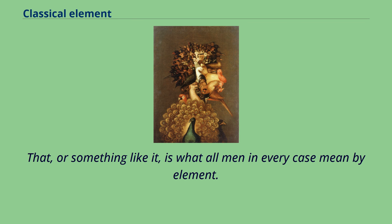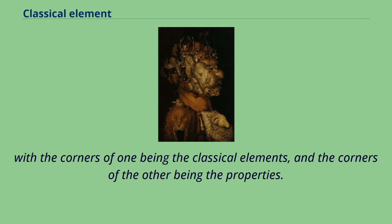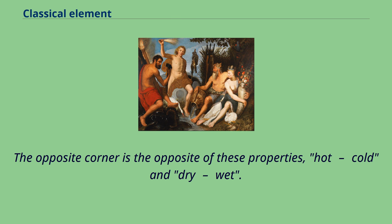In his On Generation and Corruption, Aristotle related each of the four elements to two of the four sensible qualities. A classic diagram has one square inscribed in the other, with the corners of one being the classical elements and the corners of the other being the properties. The opposite corner is the opposite of these properties: hot-cold and dry-wet.